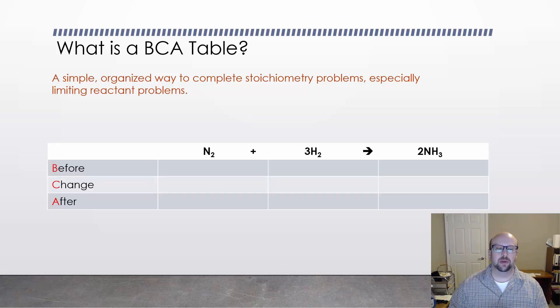It's called a BCA table because it stands for Before the reaction occurs, what is the Change during the reaction, and then what is After the reaction has gone to completion. So if we had a simple reaction like our Haber process here, we've got two reactants, one product, and we would list what we had at the beginning, probably zero of the product, then we would calculate what the change was, and then we would see how much we would have afterwards.